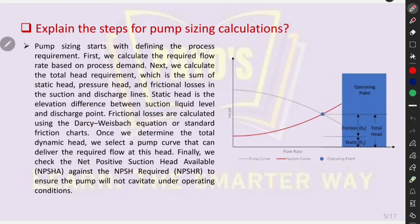Can you explain the steps for pump sizing calculations? Pump sizing starts with defining the process requirement. First, we calculate the required flow rate based on process demand. Next, we calculate the total head requirement, which is the sum of static head, pressure head, and frictional losses in the suction and discharge lines. Static head is the elevation difference between suction liquid level and discharge point. Frictional losses are calculated using the Darcy-Weisbach equation or standard friction charts. Once we determine the total dynamic head, we select a pump curve that can deliver the required flow rate at this head. Finally, we check the net positive suction head available (NPSHA) against NPSH required (NPSHR) to ensure the pump will not cavitate under operating conditions.